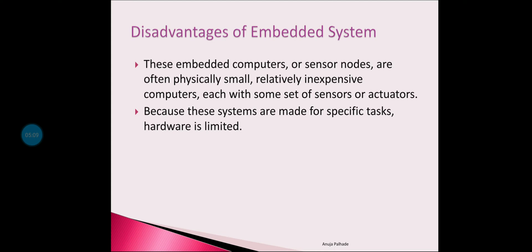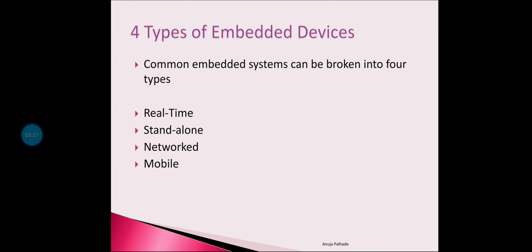Embedded computers or sensor nodes are often physically small and relatively inexpensive, each with some set of sensors and actuators. Since these systems are built for a specific task, the hardware is limited — for example, a sensor designed to only sense water does only that and no other work. Embedded systems can be broadly categorized into four types: real-time embedded systems, standalone embedded systems, networked embedded systems, and mobile embedded systems.